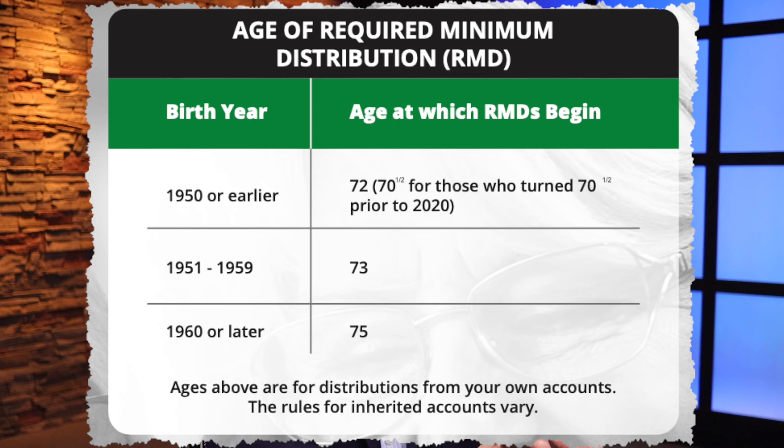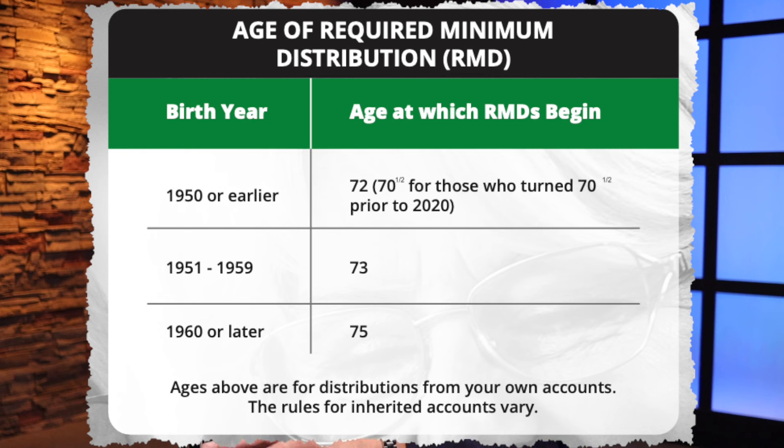I added a section for the age of required minimum distributions — first the Secure Act, and then the second Secure Act. This has changed some over the last few years, and it can be somewhat difficult to keep up with what age applies to who. This age is really important because even though it may be years away for a lot of my audience, it will tell you what kind of runway you have between now and when your RMD is going to start, so you can do some tax planning.